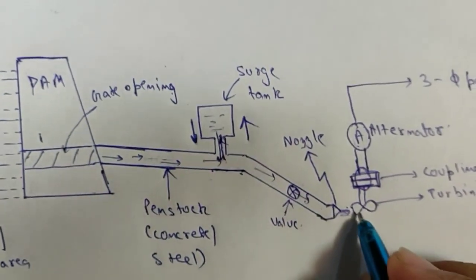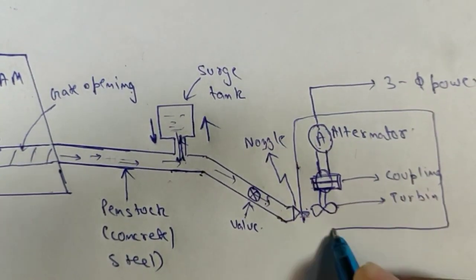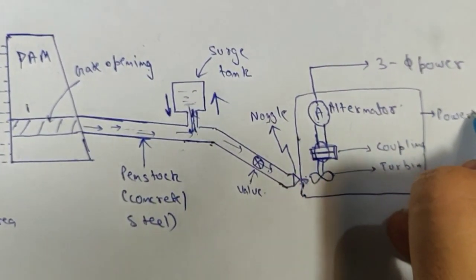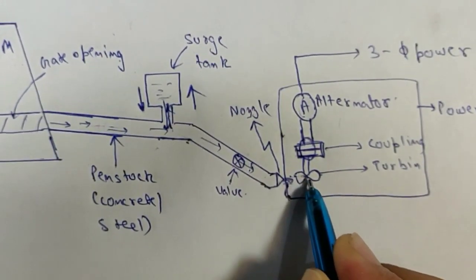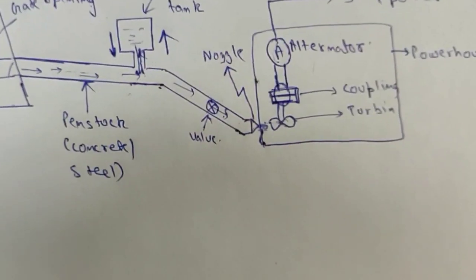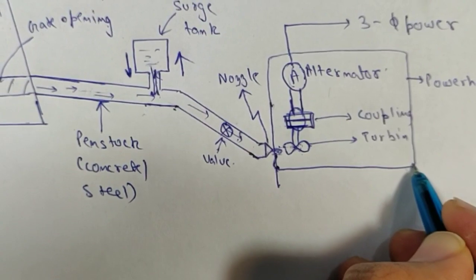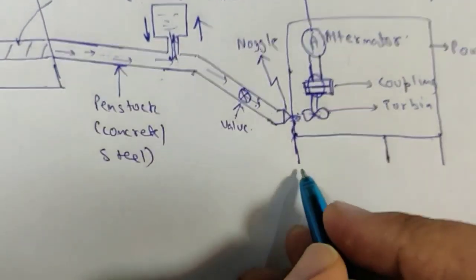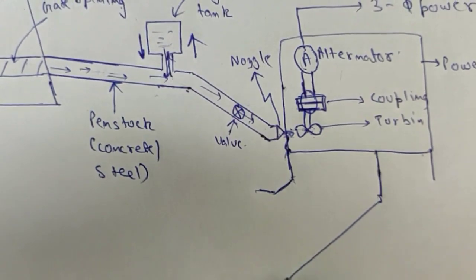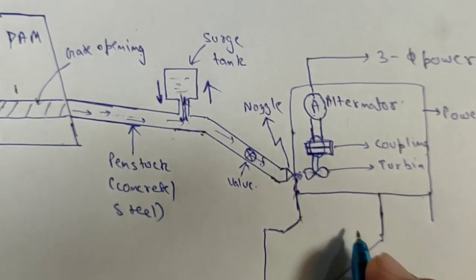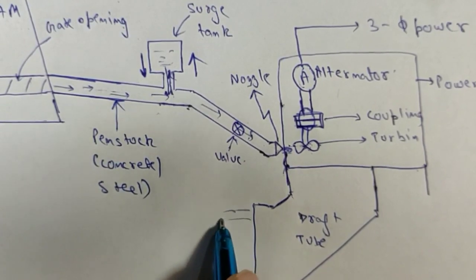This whole area is called our powerhouse because it is supplying power. Water is thrown into the turbine, which converts its kinetic energy to mechanical energy — the kinetic energy of water is reduced. After that, the water is made to flow through a pipeline called our draft tube.